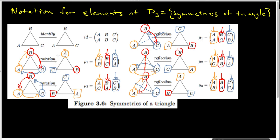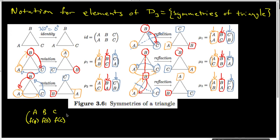So we have three rotations — because the identity is either a 360-degree or a zero-degree rotation — and we have three reflections. More importantly, we can write each one of these symmetries in a two-row notation, where the top row will be the names of the vertices, and the bottom row will be where each vertex lands. So this would be F, where F is any one of these six symmetries — the identity permutation or these six permutations.